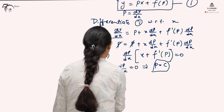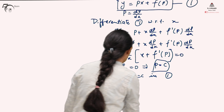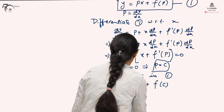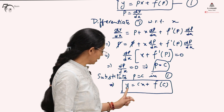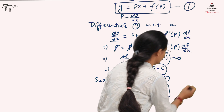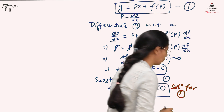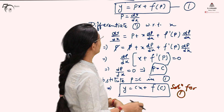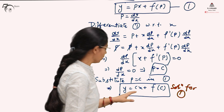Substituting p equals c in differential equation one, it becomes y equals cx plus f(c), where c is a constant. This equation involves only the dependent variable, the independent variable, and a constant, so it is the general solution of the Claret's form. We can find the solution simply by substituting p with the constant c.